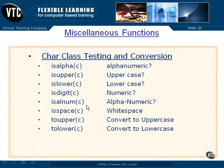Here are some character class testing and conversion functions. We already used tolower in our earlier program where we converted to lowercase. These testing functions return zero for false or a positive value for true. isalpha tests if a character is alphabetic, isupper tests for uppercase, islower for lowercase, isdigit for a numeric digit, isalnum for alphanumeric, and isspace for whitespace — things like a space, tab, carriage return, form feed, or vertical tab. toupper converts a character to uppercase if it isn't already, and tolower converts to lowercase.